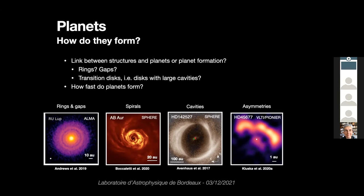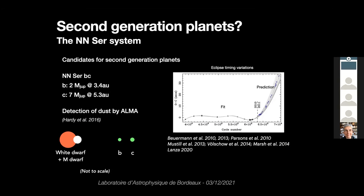Is the disk structure due to a planet embedded in the disk, or is it due to other processes that will cause planet formation? Today I'm not going to talk about disks around young stars, but I'll tell you about planets that are probably formed around post-main sequence stars. Do we know some second generation planet candidates? The answer is yes. Today I will speak about planets around low and intermediate mass stars.